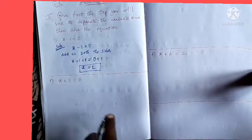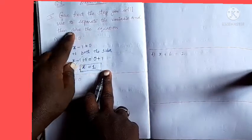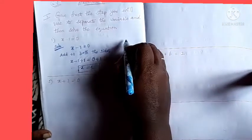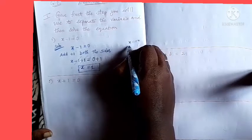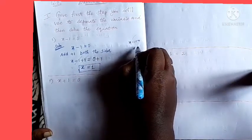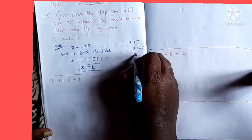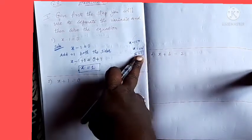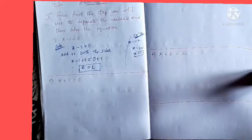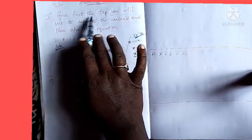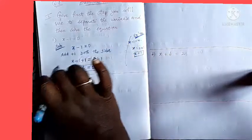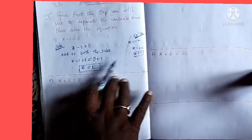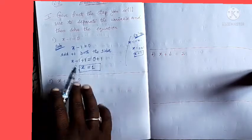Okay, if they only say 'solve,' you can directly use the shortcut answer: x minus 1 equal to 0, so the minus 1 moves to the right side and becomes plus 1, giving x equal to 1. You get the same answer both ways. But since the question says 'give the step you will use to separate the variable,' you need to follow the full method. Now, the second question.